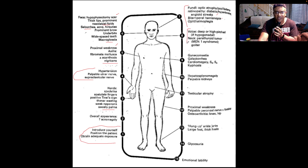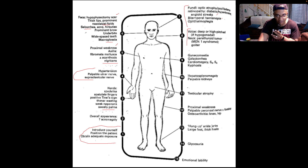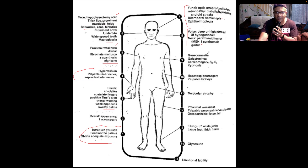Listen to the patient speak. Do they have a deep or high-pitched voice, which could be the case if they are hypogonadal? In the neck, look for a mass which could indicate a parathyroid tumor. Remember that pituitary abnormalities keep company with MEN, especially multiple endocrine neoplasia type 1, which entails the three Ps: pituitary, parathyroid, and pancreatic. Look for a goiter. Working down to the precordium, look for gynecomastia, galactorrhea, cardiomegaly, signs of heart failure, third or fourth heart sound, and kyphosis.